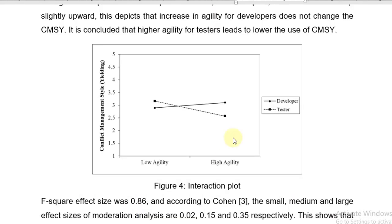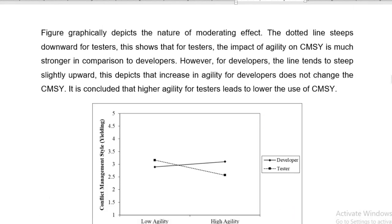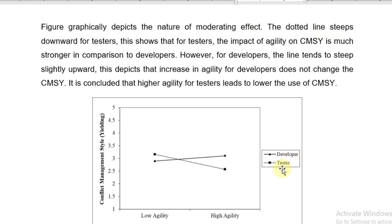After that, now we go towards their interpretation. So the interpretation is that figure graphically depicts the nature of the moderating effect. The dotted line that represents a tester category of the moderator steeps downward for the tester. This shows that for testers, the impact of agility on CMSY is much stronger in comparison to developers.